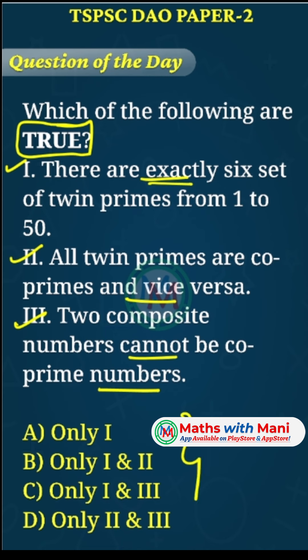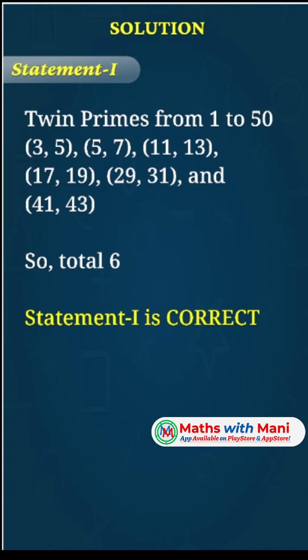Regarding the first statement, you need to know that twin primes are prime numbers in which the difference between them should be two. From 1 to 50, the twin primes are: (3,5), (5,7), (11,13), (17,19), (29,31), and (41,43). So there are exactly 6 twin primes from 1 to 50, making the first statement correct.